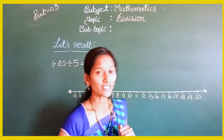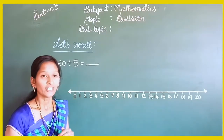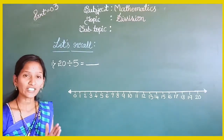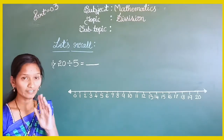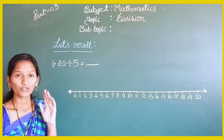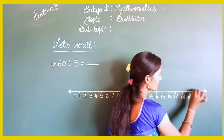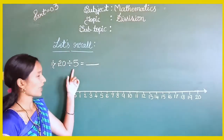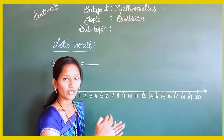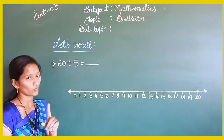The first problem is 20 divided by 5 equals what. In the last class I said some points to solve this problem very easily. You have to start from the starting number, which is 20 — also called the dividend. So we start from 20, and the 5 indicates the number of steps.